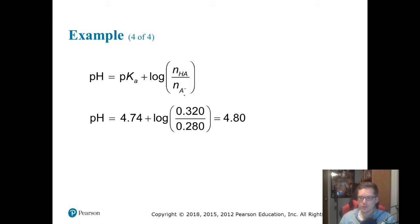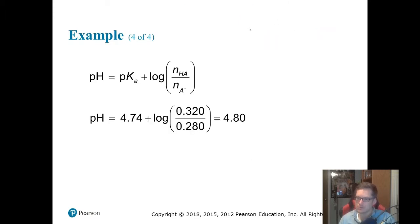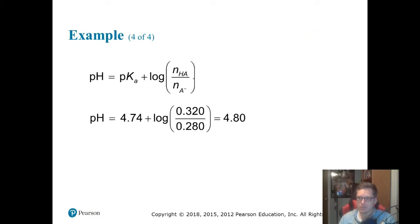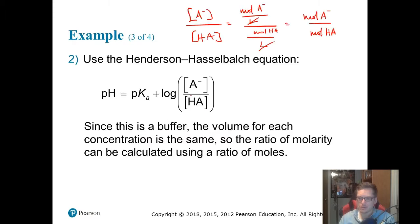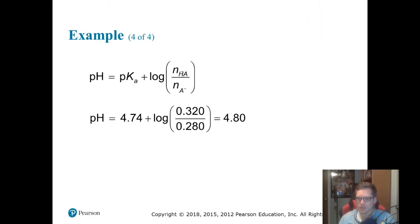So we can just plug in moles values. Our pH equals the pKa plus log of 0.320 over 0.280, and you add that to the pKa to get a pH of 4.80.